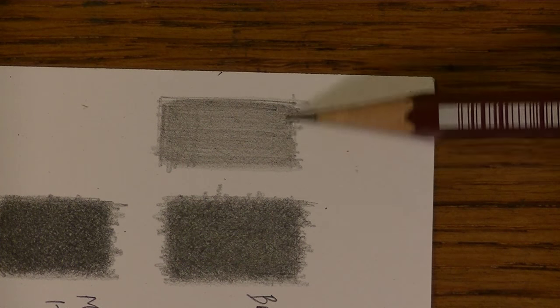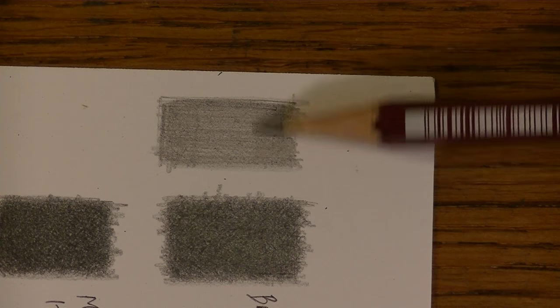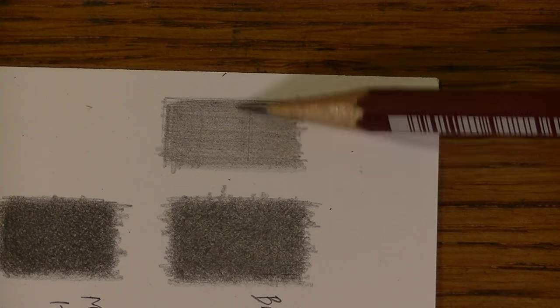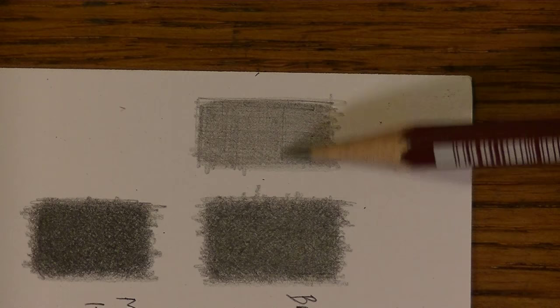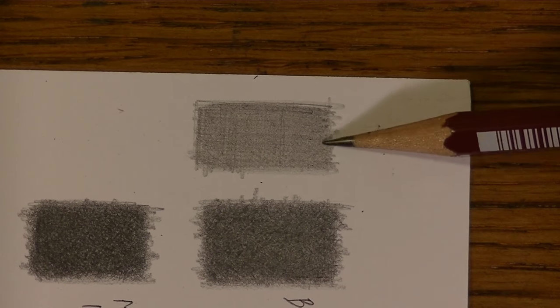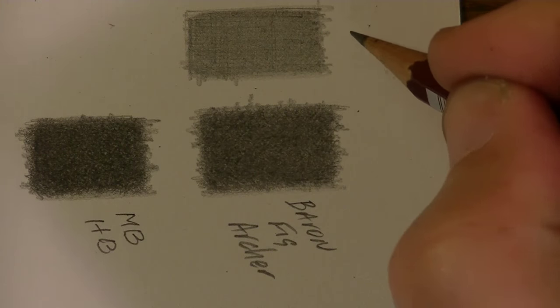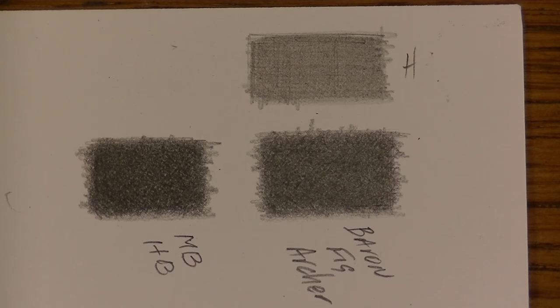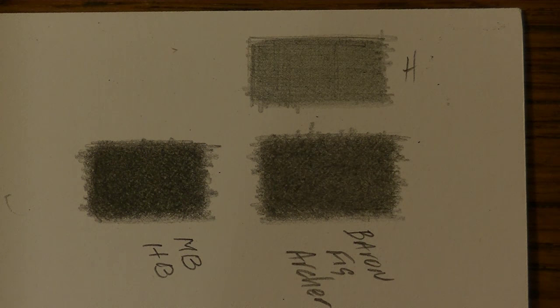So in a second here I am going to stop because it looks like I am not going to be able to achieve anywhere near the Baron Fig's darker quality. And that's a given. So we know that it's darker than an H pencil. So I am going to stop there with that. And that leaves me with one last pencil to use in this case. And that would be the F pencil.